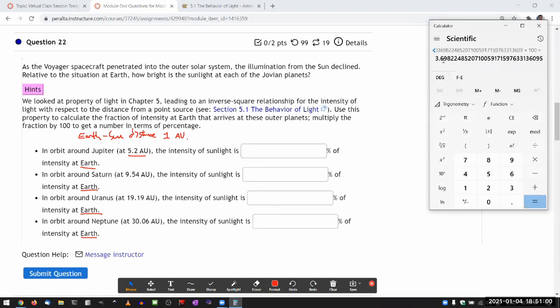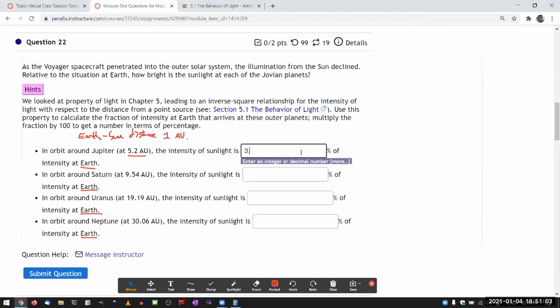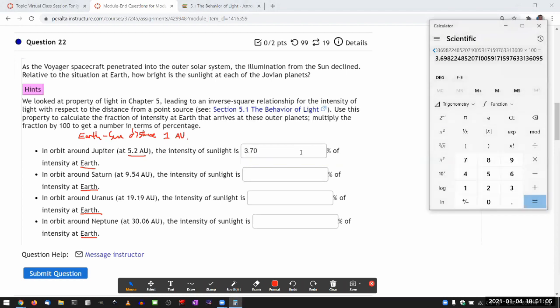Percent, so let me just multiply it by 100 so that I can get the answer in percent. Three points, let me round it to three sig figs, so 3.70. That should be it. Let me just submit it to make sure that I'm on the right track, and I'll do the rest.